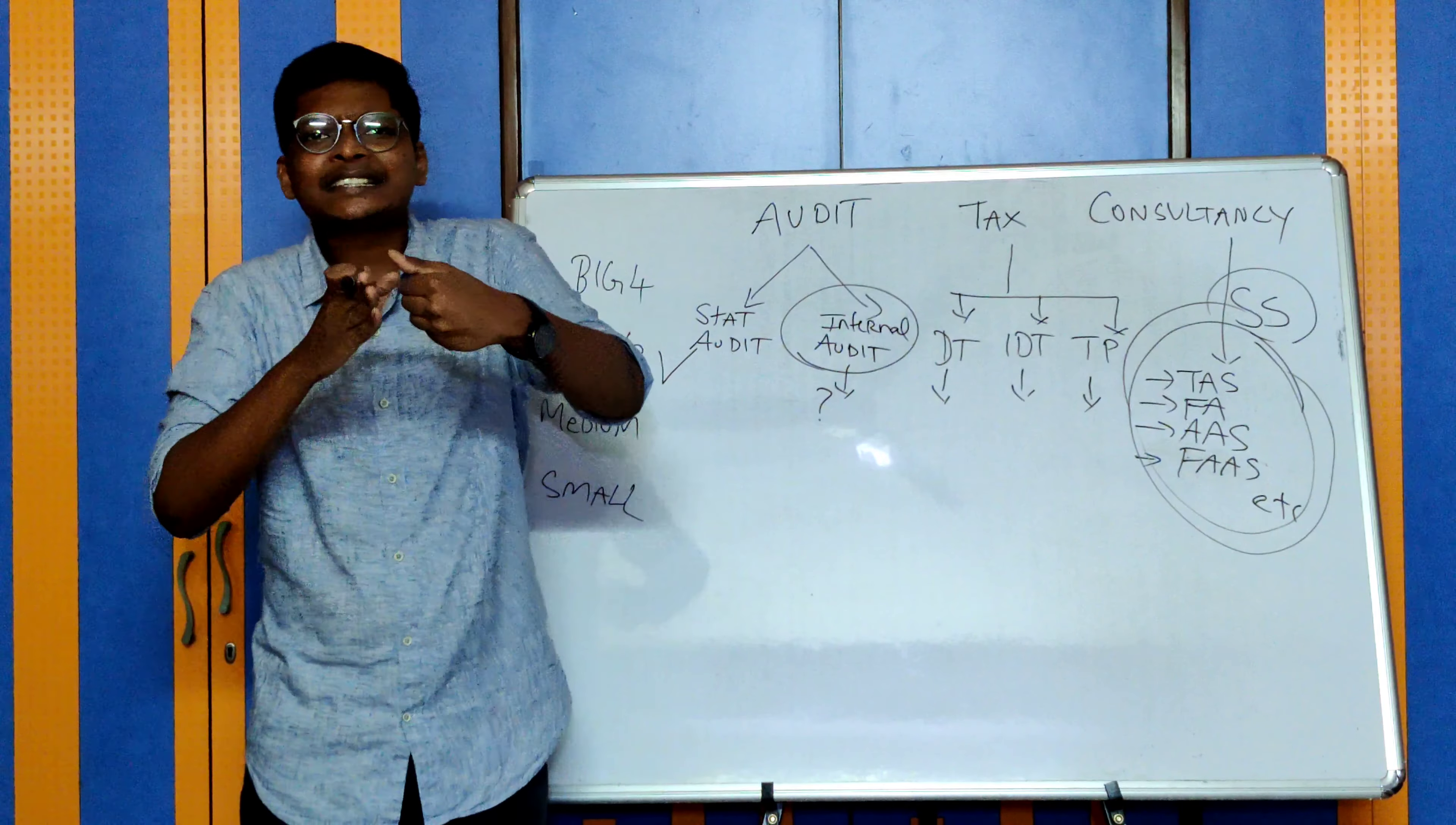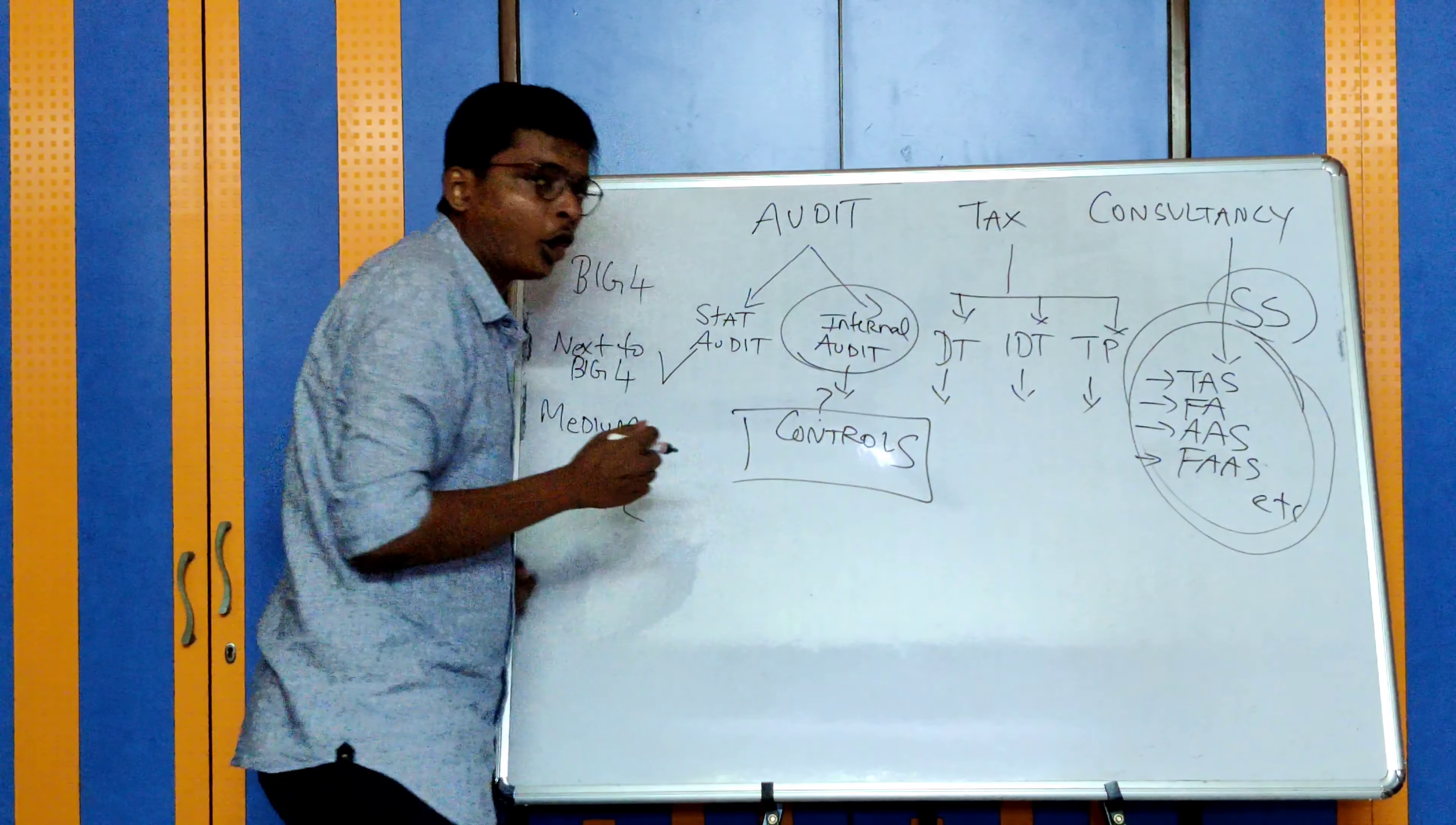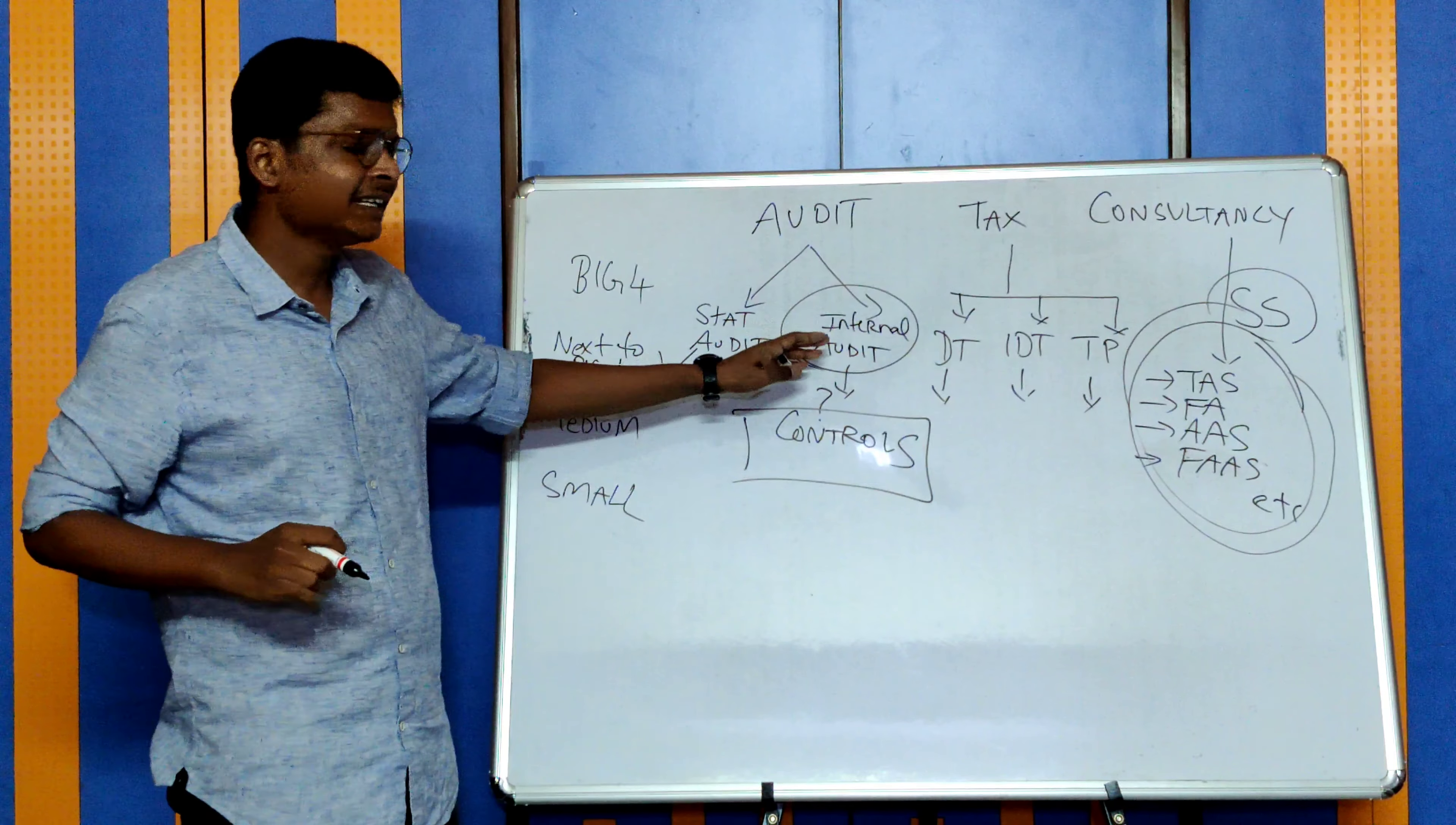For example, a company has a hiring process - in internal audit you check if the company is following this process. For sales they'll have another process - you check if the process is good, if controls are operating effectively. That is the main work, but there is a lot of subset work in internal audit.